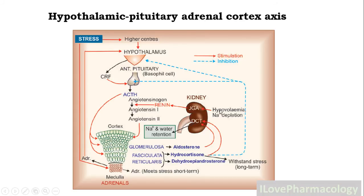There is one more mechanism mediated through the kidney: whenever there is hypovolemia or sodium depletion, this leads to stimulation of the juxtaglomerular apparatus, which releases renin. Renin is responsible for conversion of angiotensinogen into angiotensin I, later into angiotensin II, which is responsible for stimulation of the adrenal cortex to release corticosteroid hormones.